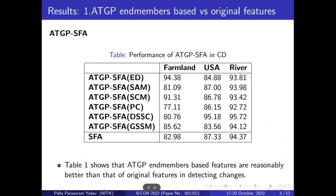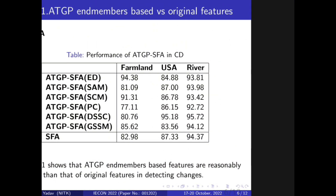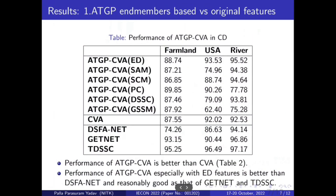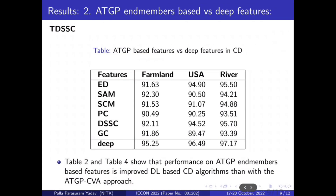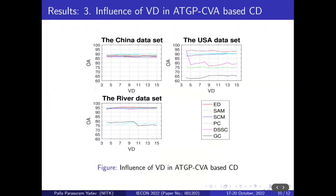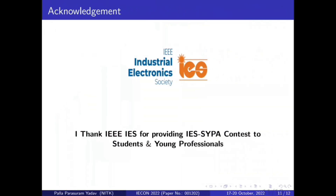The proposed features are better than the original features and as effective as deep features. In addition, a minimum of 5 features are enough to get high accuracy comparable to that of deep learning models.